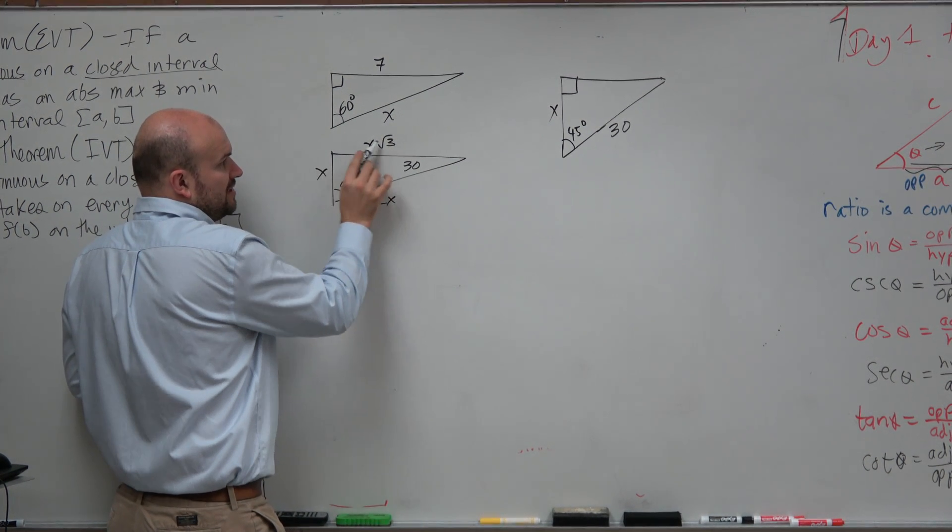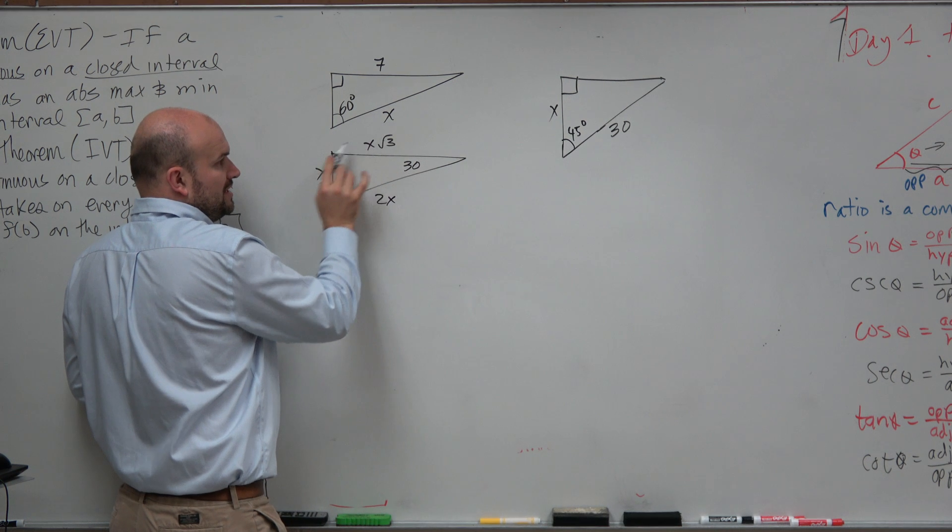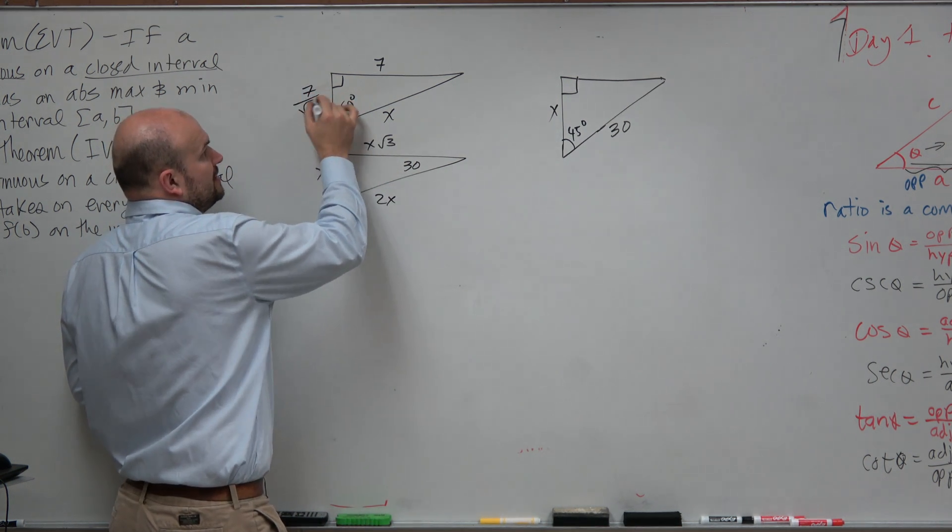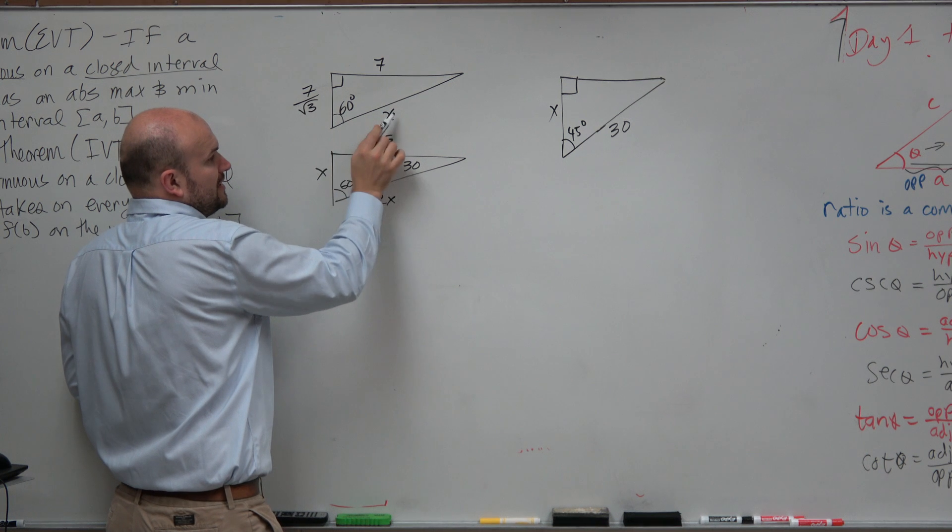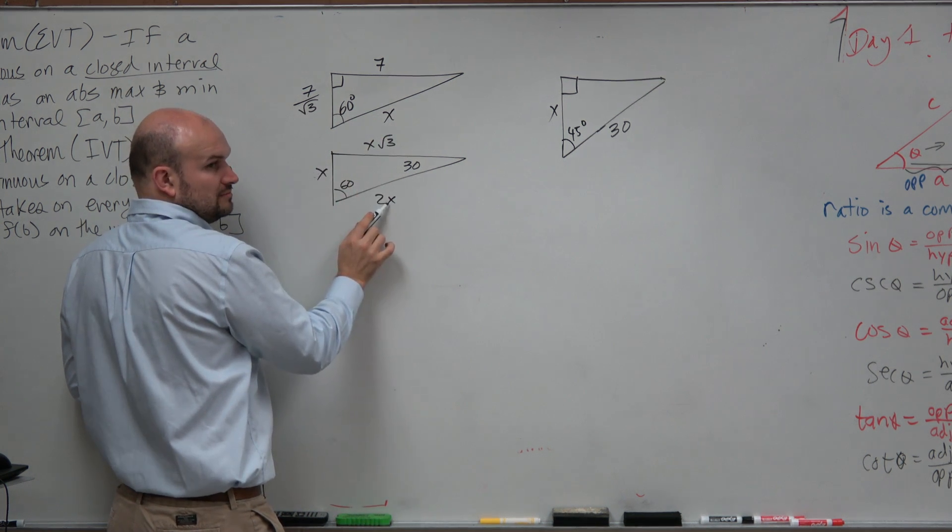So technically, if I'm going from here to multiply by square root of 3, that means to go from here to here, I'd have to divide by the square root of 3. And then to go from here to here, you're just multiplying by 2, yes?